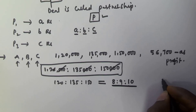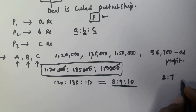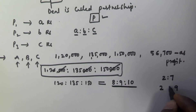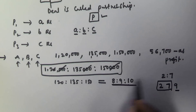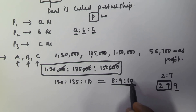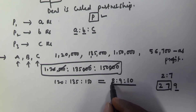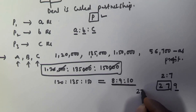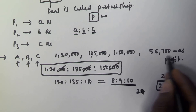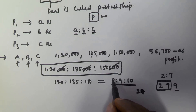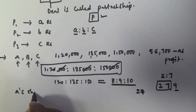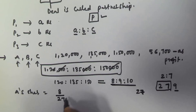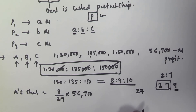For example, if chocolates are distributed between two persons in the ratio 2 : 7, and there are nine chocolates total, the first person gets two and the second gets seven. Similarly, the total number of parts here is 8 + 9 + 10 = 27. So A's share is 8 parts out of 27. A's share = (8/27) × 56,700.